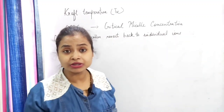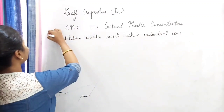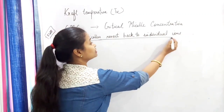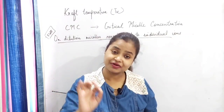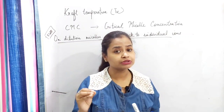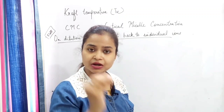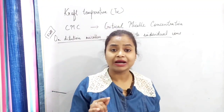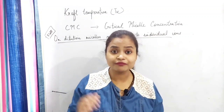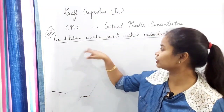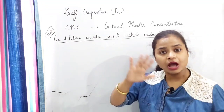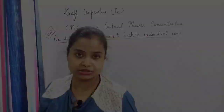A very important point to note is that on dilution, micelles revert back to individual ions. That is why at normal or low concentration the substance behaves like a normal electrolyte, but at higher concentration it behaves like a colloidal solution. When you dilute the solution, those micelles which have been formed will revert back again to their individual ions.